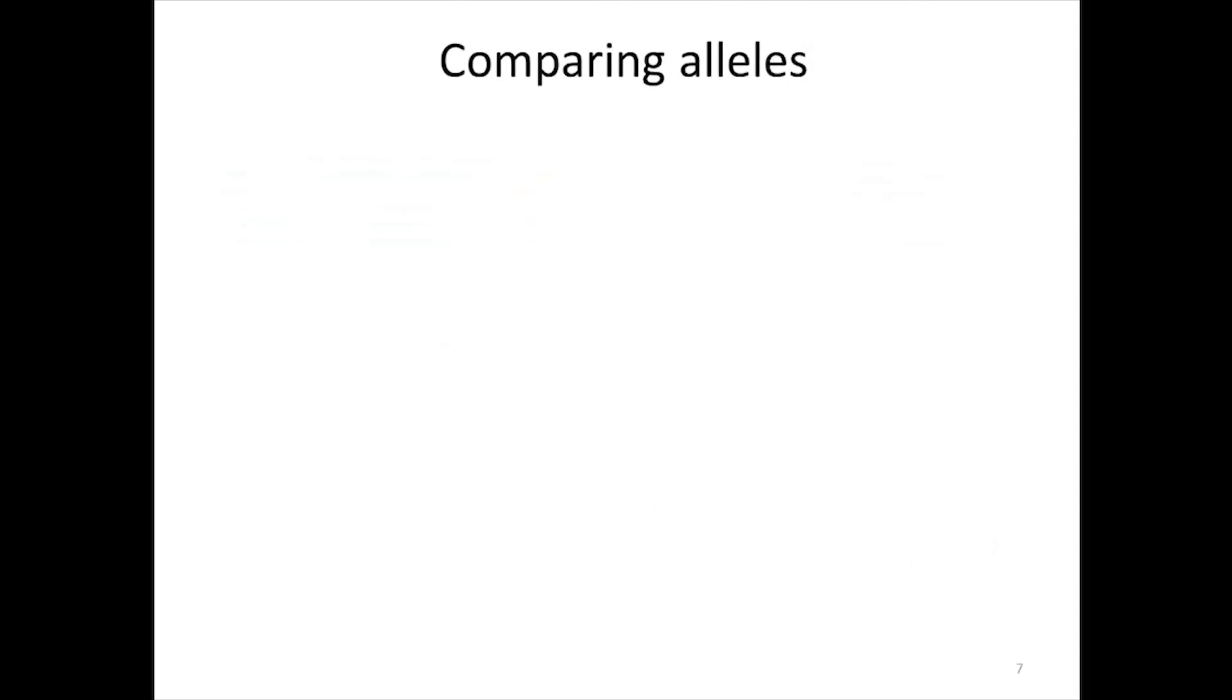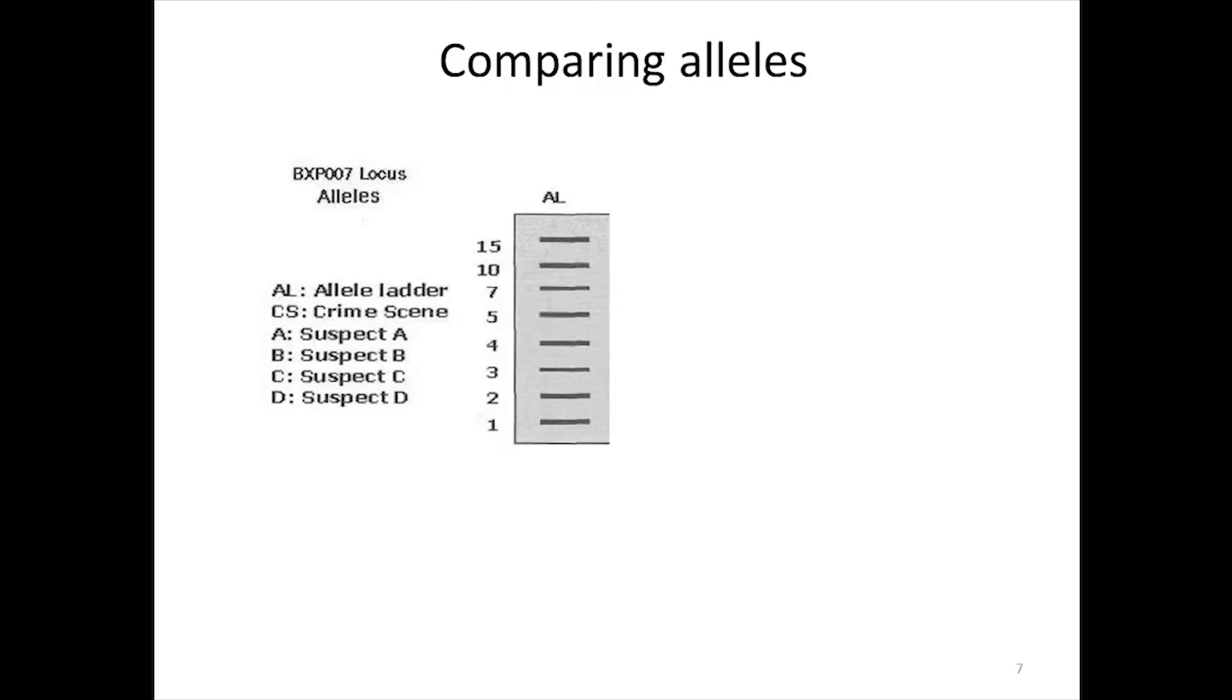For example, in a murder case, scientists compare the allele ladder of a locus with the alleles found in different DNAs involved in a crime. The first column of the figure is the allele ladder showing all the possible allele values for a locus.